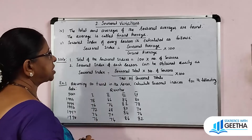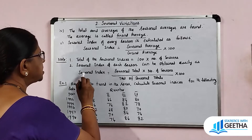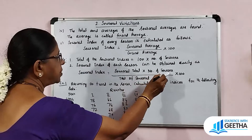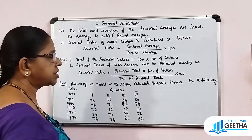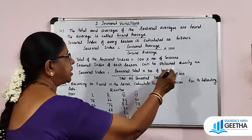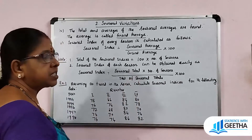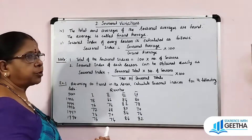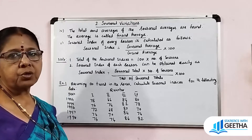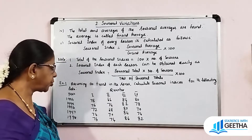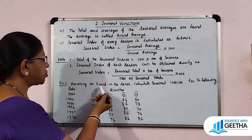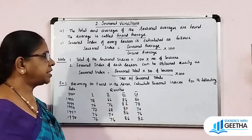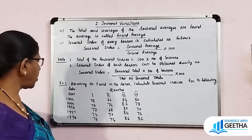Alternatively, the seasonal index of each season can be obtained as: Seasonal Index = (Seasonal Total × Number of Seasons) / (Total of Seasonal Totals) × 100. This formula makes it easier to compute the seasonal index directly. Now, let's look at an example — assuming no trend in the series, calculate the seasonal indices for the given data.